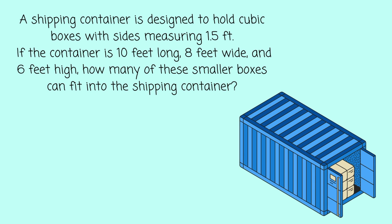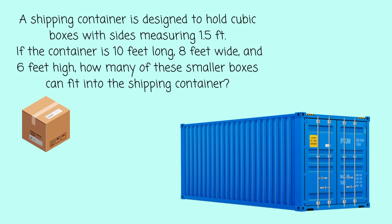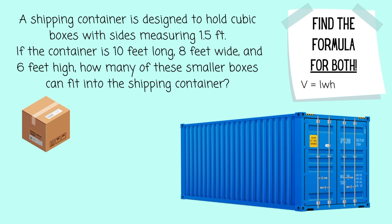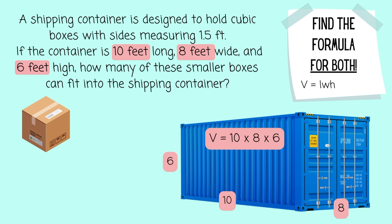I'm going to highlight the important pieces and break this down into two parts, finding the volume for both. Let's focus on the shipping container first. I have 10 feet for my length, 8 feet for my width, and 6 feet for my height. Multiplying those together — 10 times 8 times 6 — gives me 480 feet cubed.